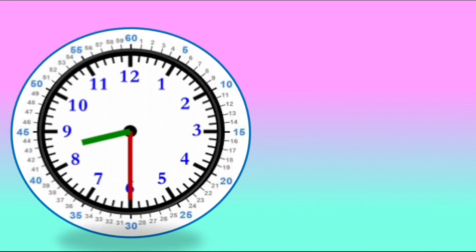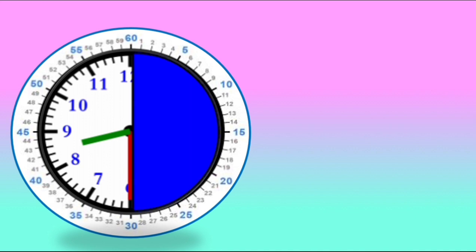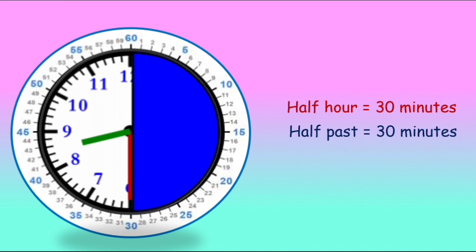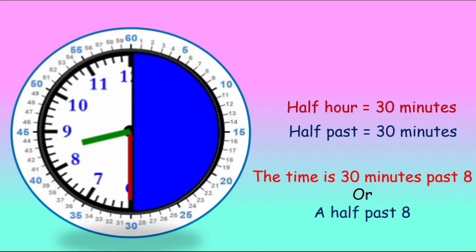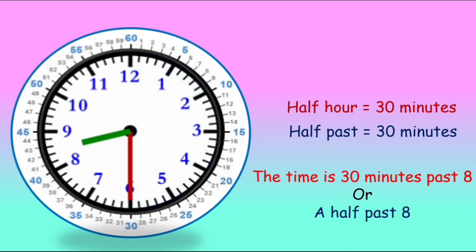The minute hand has travelled to 6, which means it has travelled half the clock — 30 minutes. So it is half past. The time is 30 minutes past 8 or half past 8.